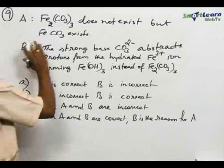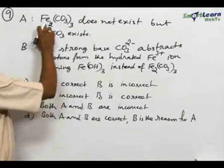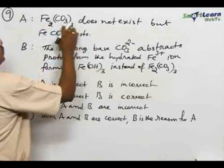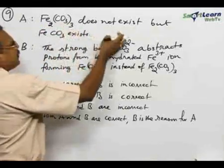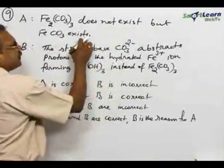Number 9. Two statements are given. A: Fe2(CO3)3, that is the ferric carbonate, does not exist, but FeCO3 exists.